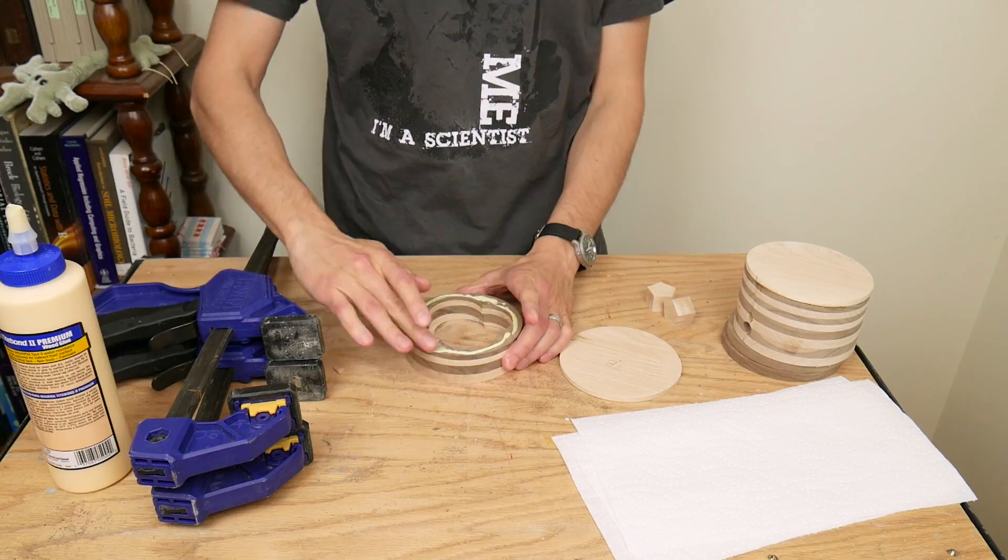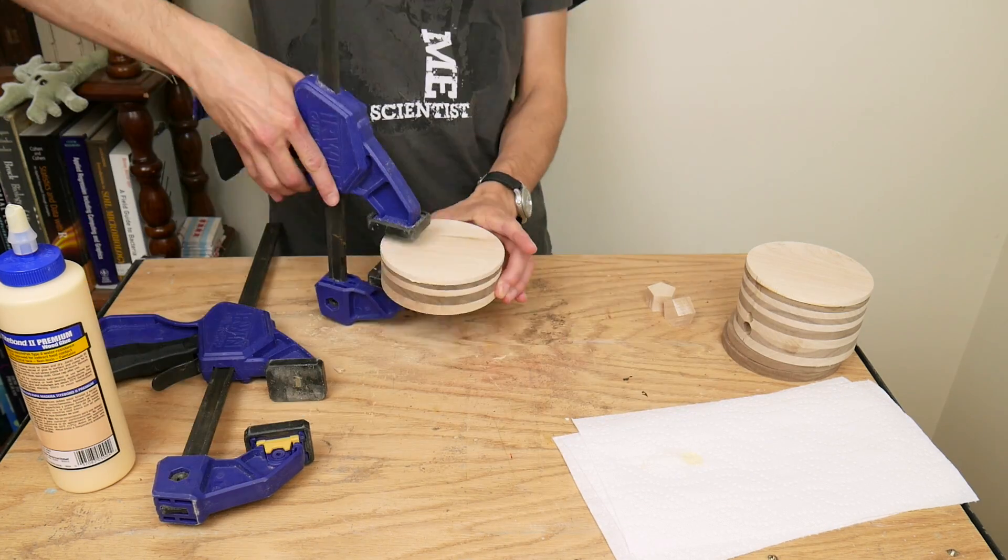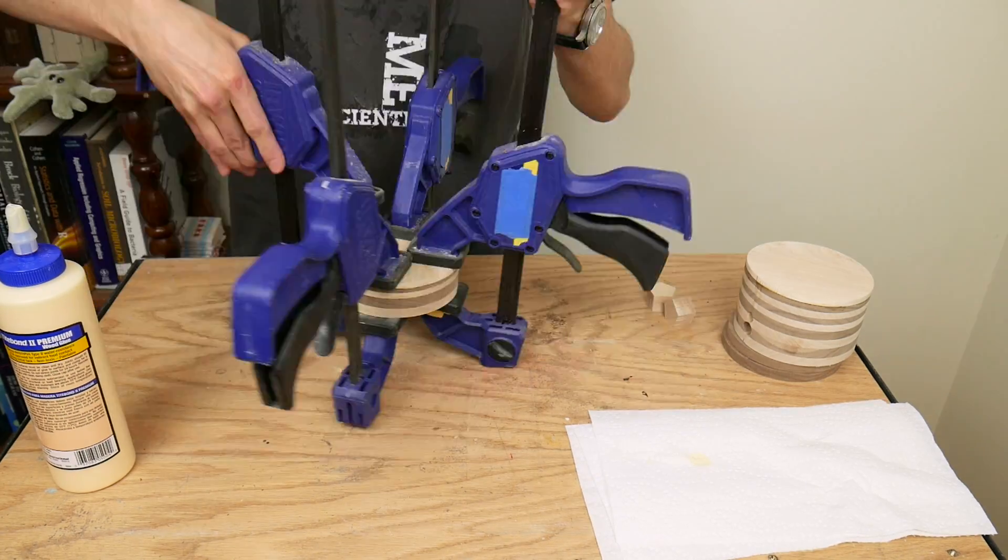Then glued the bottom layer onto the top of the lamp and let that dry.